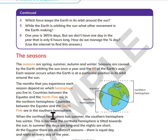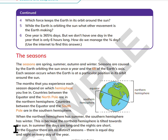When the Northern Hemisphere has summer, the Southern Hemisphere has winter. This is because the Northern Hemisphere is tilted towards the Sun. In summer, the days are long and the nights are short. At the equator, there are no seasons. There is an equal day and night on every day of the year.